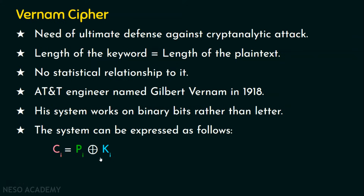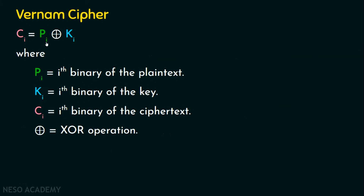To clarify the notation: p_i is the i-th binary bit of the plaintext, k_i is the i-th binary bit of the key, and c_i is the i-th binary bit of the ciphertext. The operation applied is the bitwise exclusive OR operation.